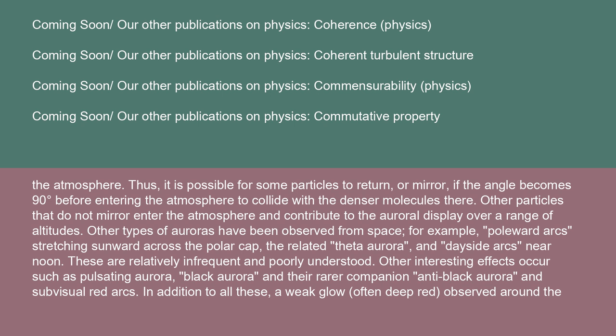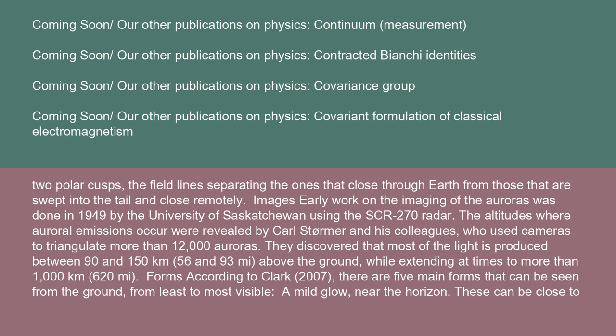Other types of auroras have been observed from space — for example, poleward arcs stretching sunward across the polar cap, the related theta aurora, and dayside arcs near noon. These are relatively infrequent and poorly understood. Other interesting effects include pulsating aurora, black aurora, anti-black aurora, and subvisual red arcs. A weak glow, often deep red, is observed around the two polar cusps — the field lines separating those that close through Earth from those swept into the tail.